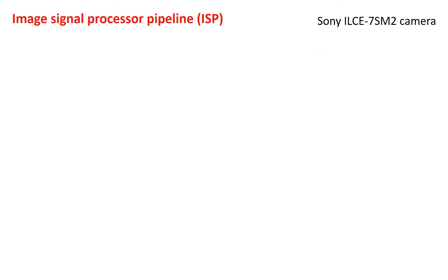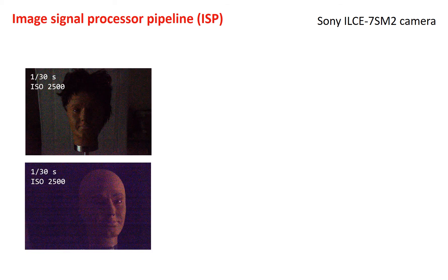In low-light conditions, a traditional ISP pipeline produces suboptimal images that are usually very dark and noisy due to a low photo count and low signal-to-noise ratio. High ISO can be used to increase brightness, but it also amplifies noise.